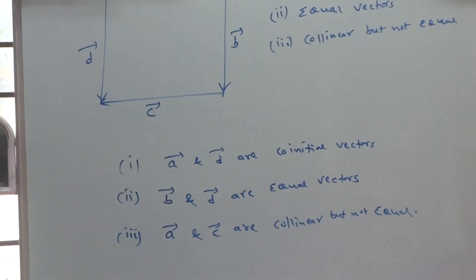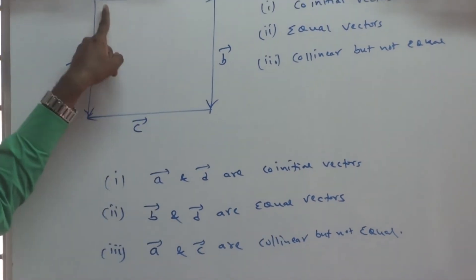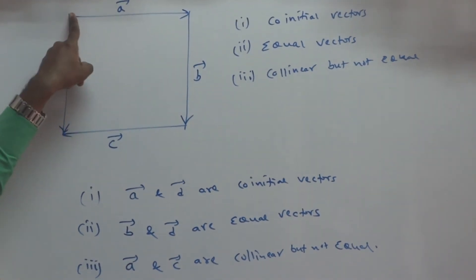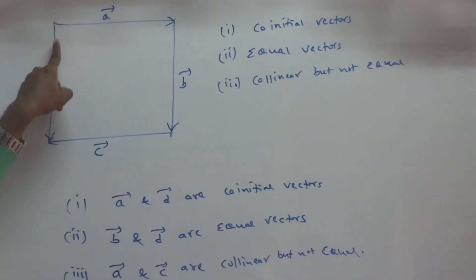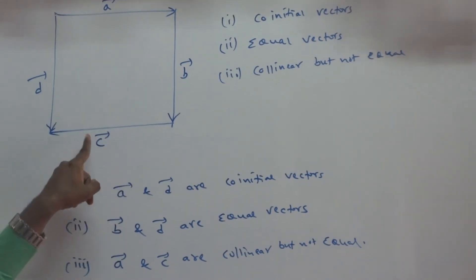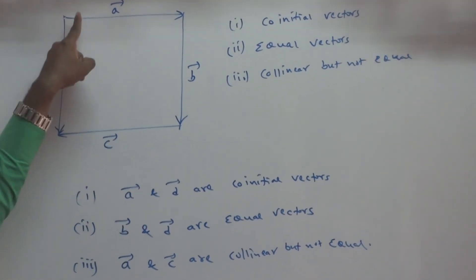That's what I am saying to you. I can repeat once again. Co-initial means two vectors start with the same point, called co-initial. These are equal. These two are collinear but not equal.